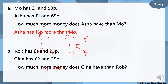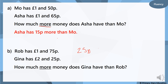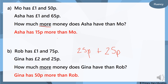Rob has one pound and seventy-five pence. Gina has two pounds and twenty-five pence. How much more money does Gina have than Rob? Let's round up to two pounds: from seventy-five pence we go eighty-five, ninety-five — that's twenty — then a hundred. That's twenty-five pence to make two pounds, and then there's another twenty-five pence. Twenty-five plus twenty-five: twenty add twenty is forty, five add five is ten — so Gina has fifty pence more than Rob.